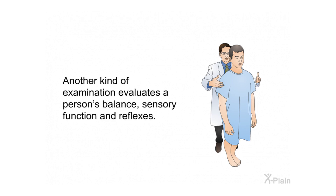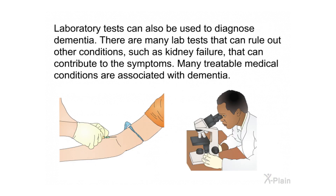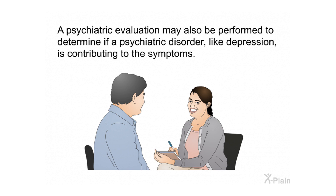Another examination evaluates a person's balance, sensory function, and reflexes. Brain scans and other tests — including CT, MRI, and EEG — will be done to identify strokes, tumors, or other problems that may cause dementia. Laboratory tests can also rule out other conditions such as kidney failure. A psychiatric evaluation may also be performed to determine if a disorder like depression is contributing to the symptoms.